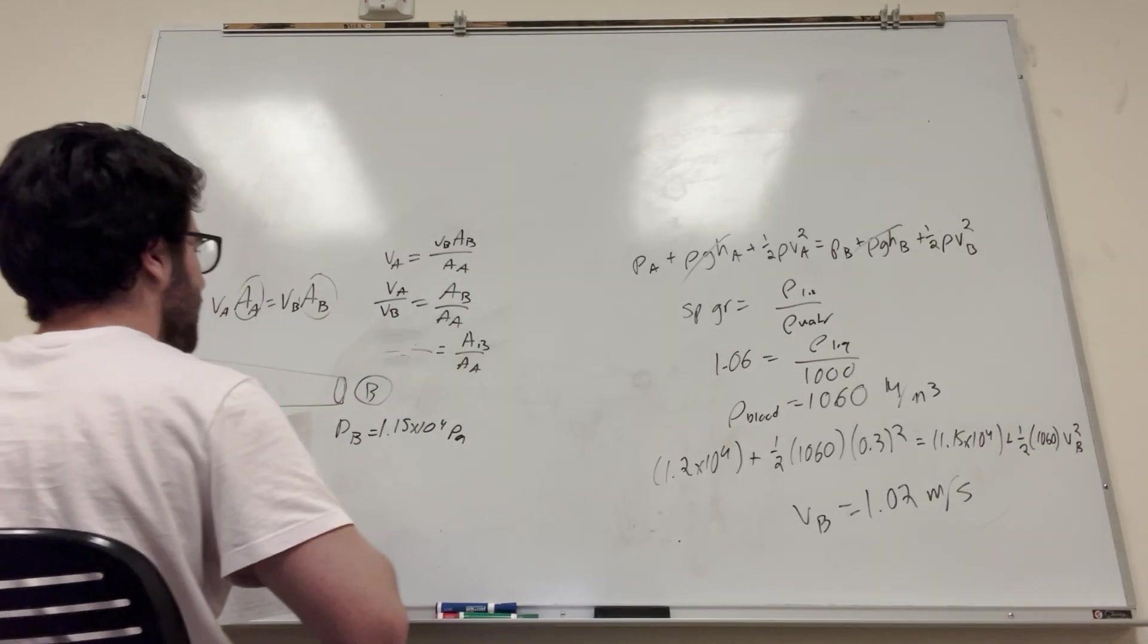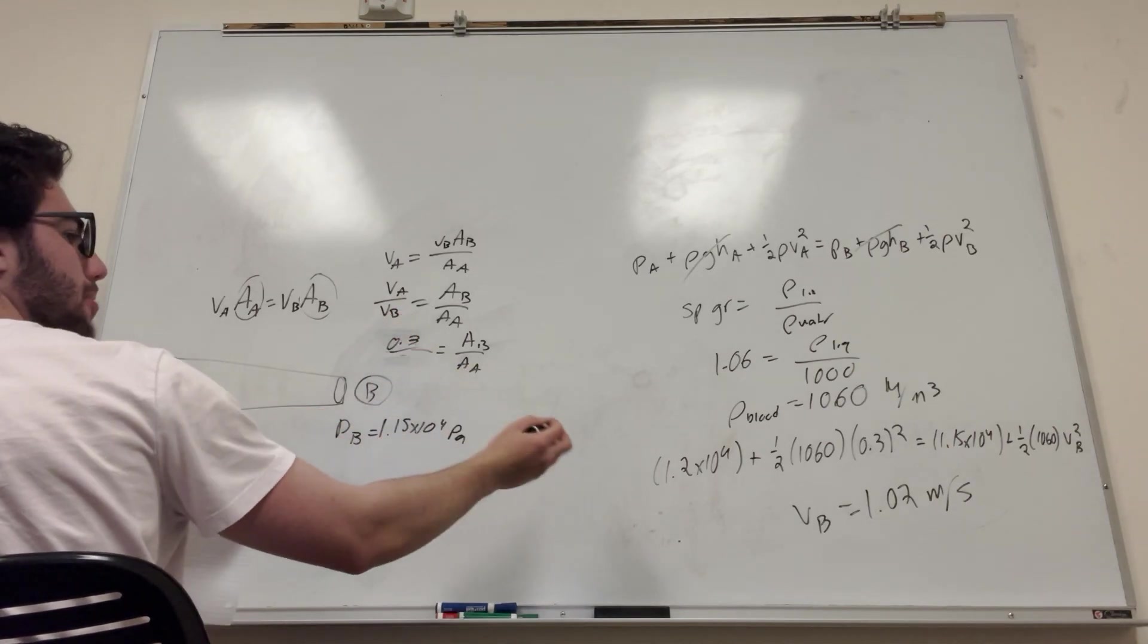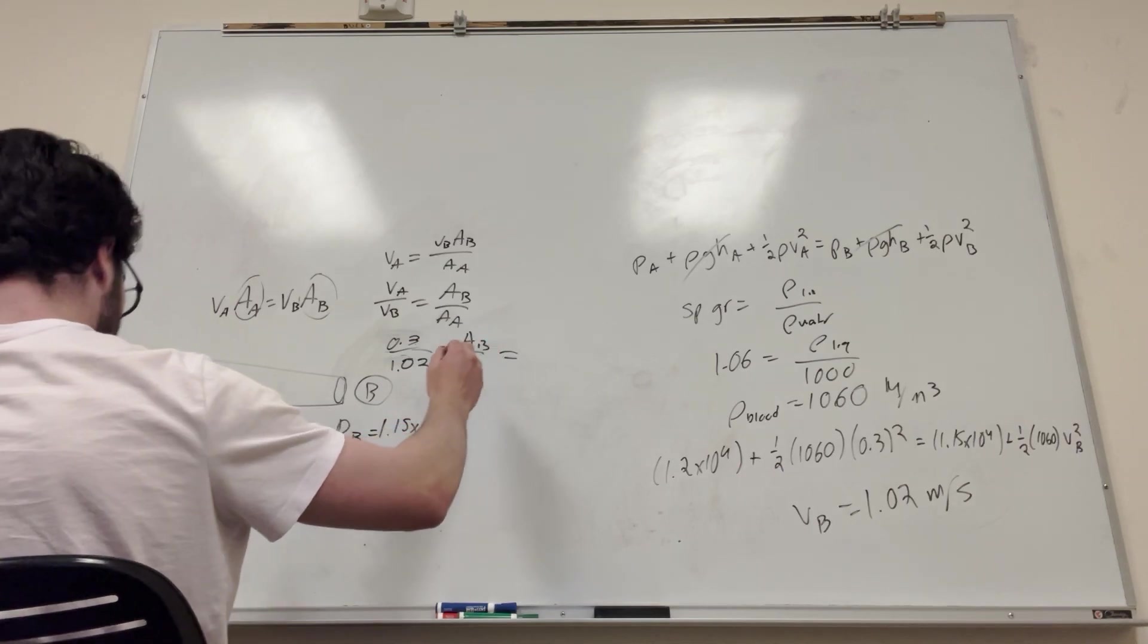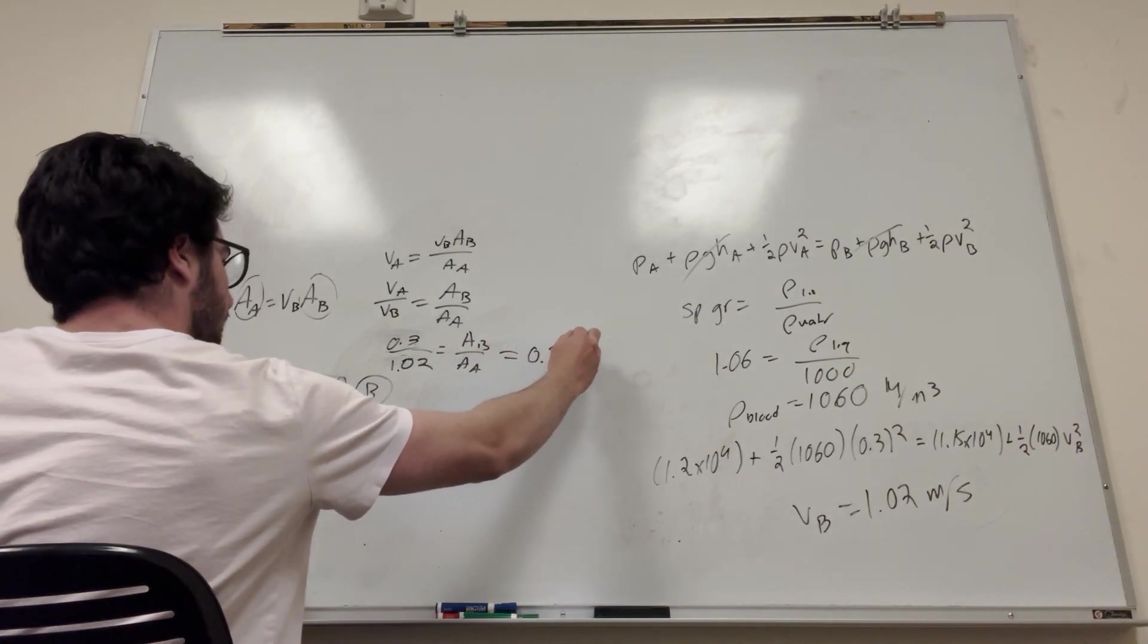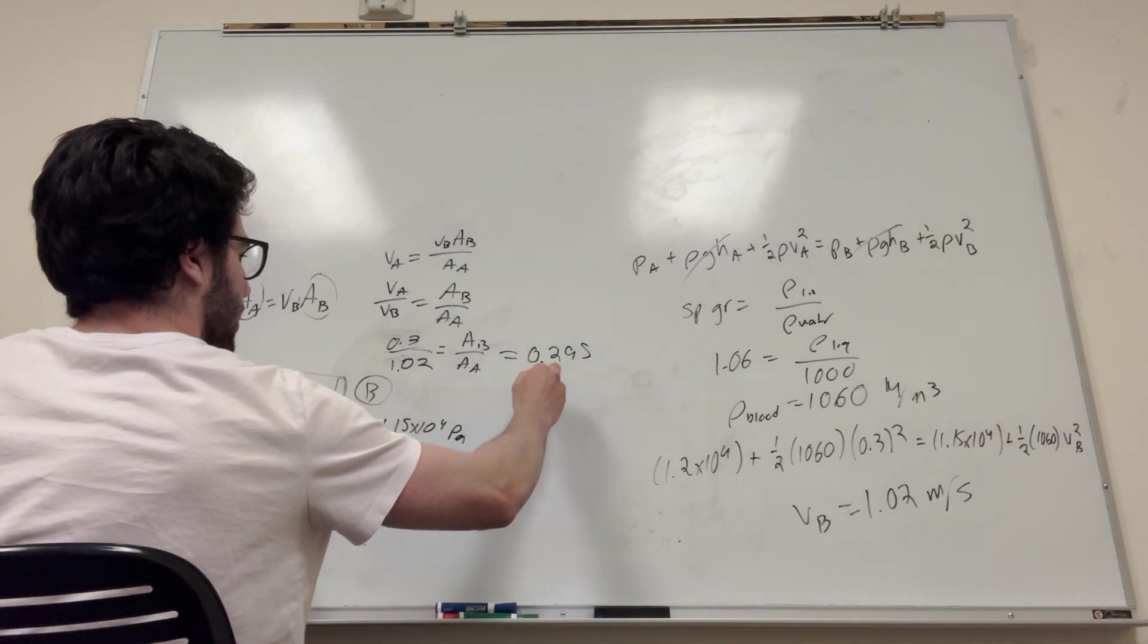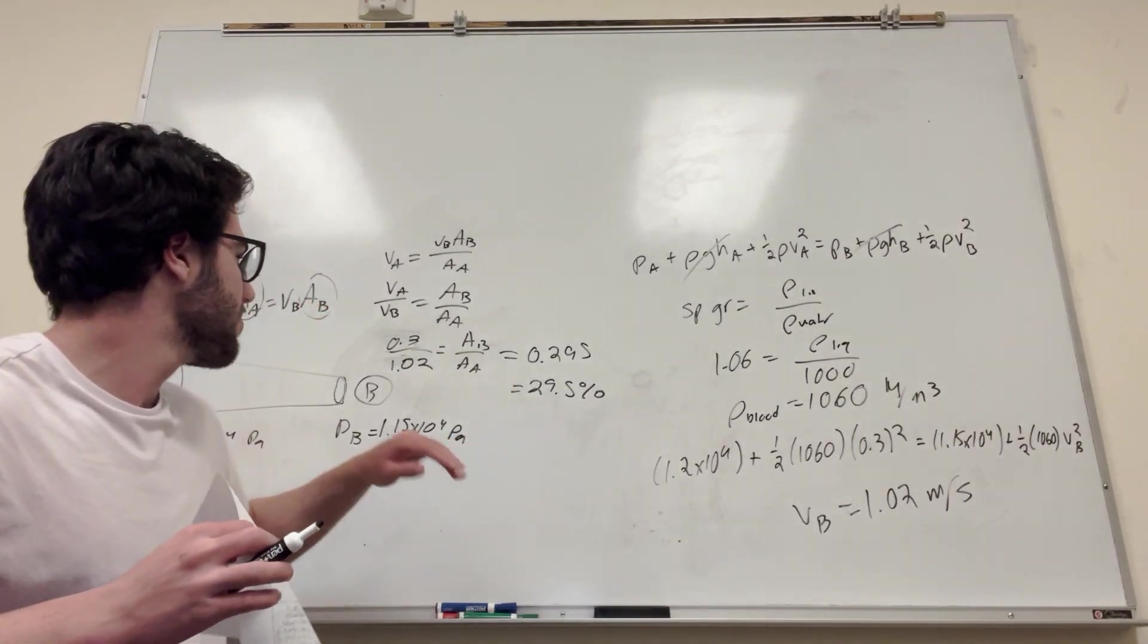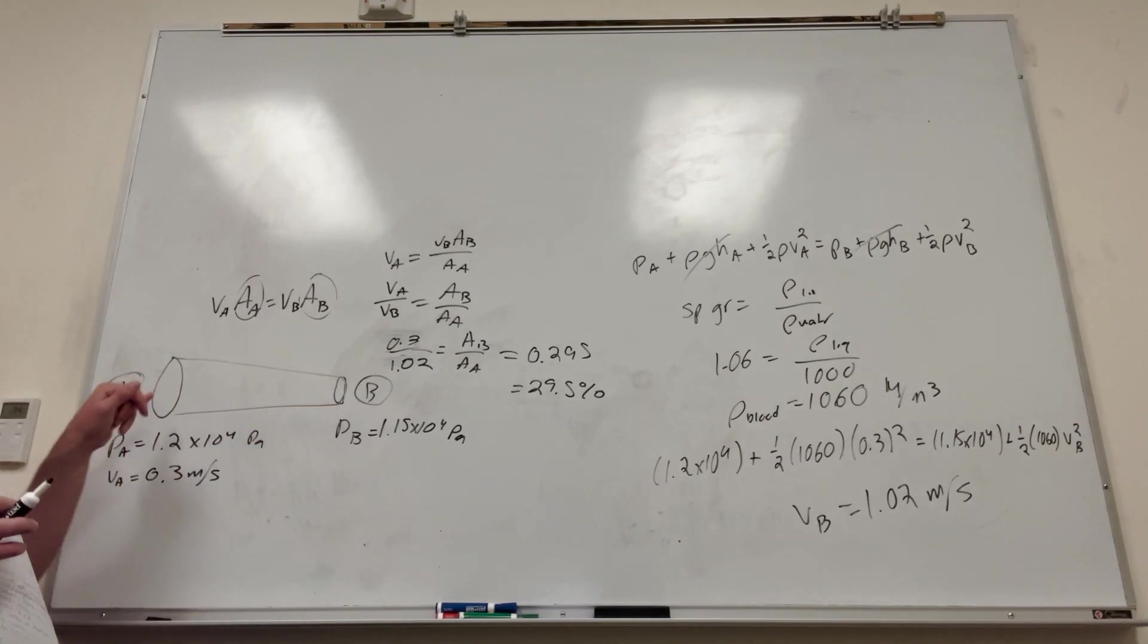So velocity of A is 0.3, and then the velocity of B is 1.02. So when you calculate that out, you're going to get 0.295, which is equal to 29.5%, which is not the final answer. What this number is saying is that B is 29.5% the size of A.